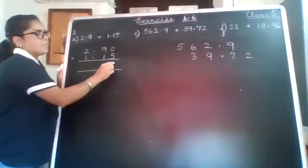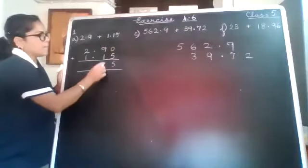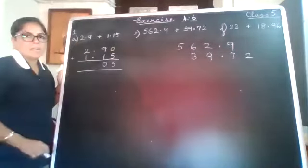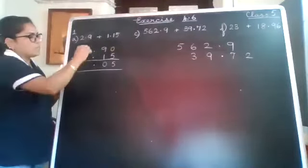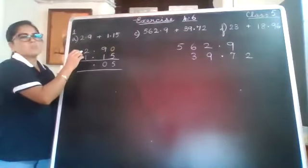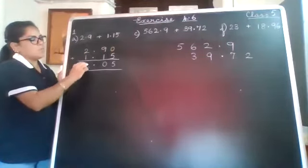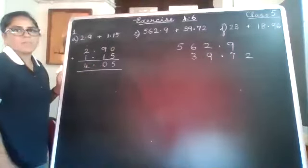Okay, and now you add like you normally add. 0 plus 5 is 5. 9 plus 1 is 10. So you write a 0 here and carry 1. Okay, now this point will come in its place where the point is. In the answer also the point will come there itself. Now 1 plus 2 is 3. 3 plus 1 is 4. The answer is 4.05.